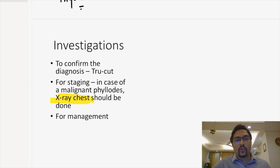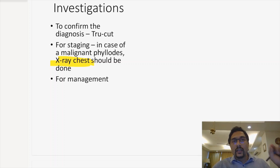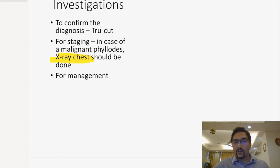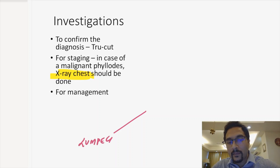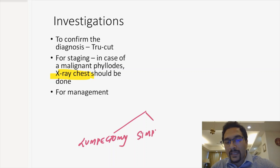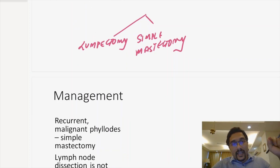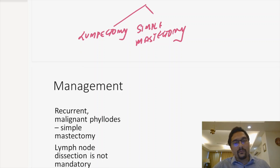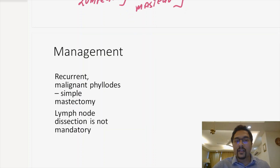How do we manage this patient? In a phyllodes tumor, once diagnosis is made, we can either do a lumpectomy or a simple mastectomy. Simple mastectomy means mastectomy without removing lymph nodes — because phyllodes usually doesn't spread to lymph nodes. Because this is a recurrent malignant phyllodes lesion, we carry out a simple mastectomy. Lymph node dissection is not mandatory. If you get negative margins, no further treatment is required except regular follow-up.